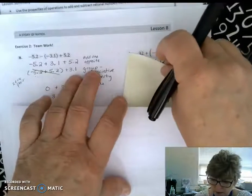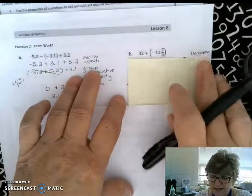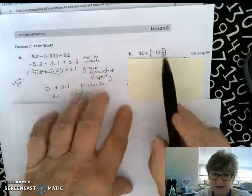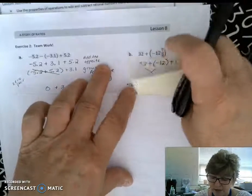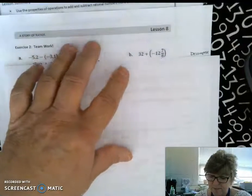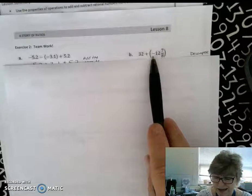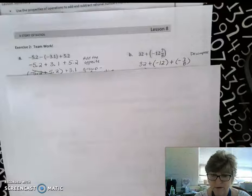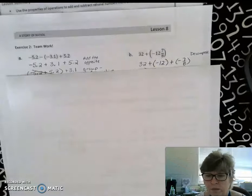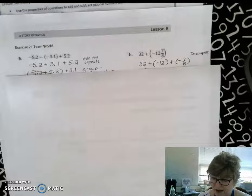On B, the first thing I need to do, just like on the front problem, is we need to decompose that fraction. As we decompose that fraction, I'm going to cover up, remember that I'm going to apply that negative sign to every part of the mixed number. 32 plus a negative 12 plus a negative 7/8ths.